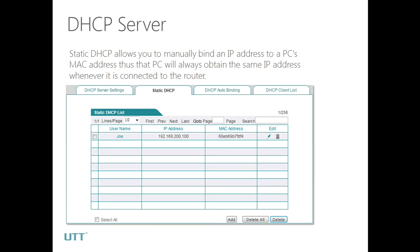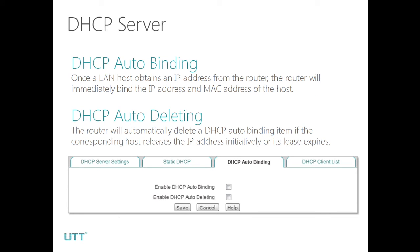The second tab in the DHCP server menu is Static DHCP. This function allows you to manually bind an IP address to a host's MAC address, so that PC will always obtain the same IP address whenever it connects to the router. The next tab is DHCP Auto-Binding. When DHCP Auto-Binding is enabled, once a LAN host obtains an IP address from the router, the router will immediately bind the host's IP and MAC addresses. When DHCP Auto-Deleting is enabled, the router will automatically delete a binding entry if the host releases the IP address or the lease expires.